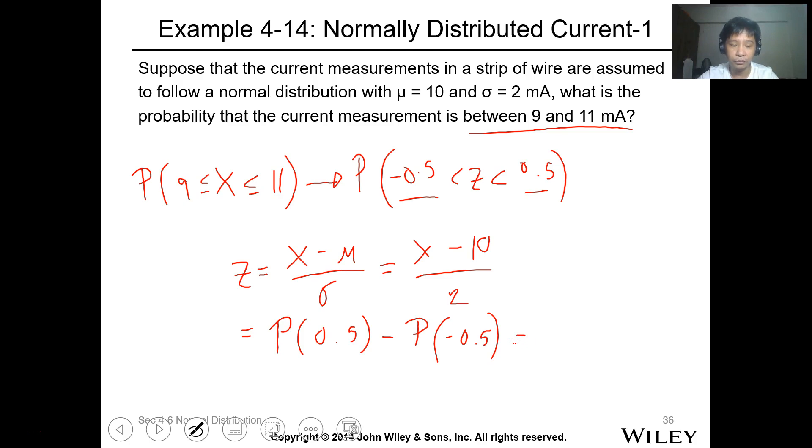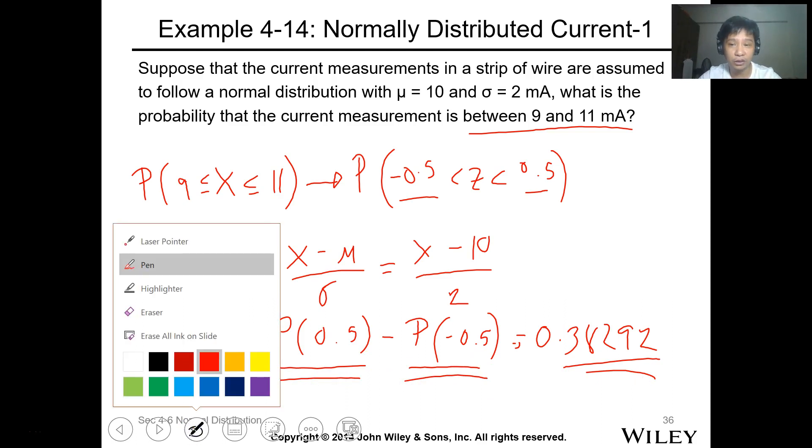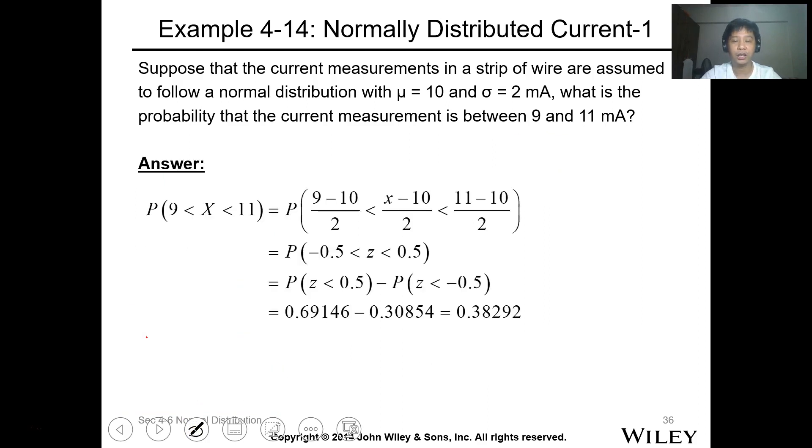So that will be probability of 0.5 minus probability of negative 0.5. So the answer is 0.38292. You can use the table to get the value but the same, 0.38292. So that's how you will utilize normalizing random distribution. You can use this Excel formula.